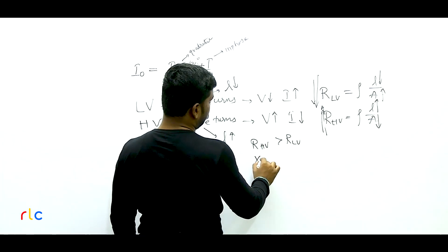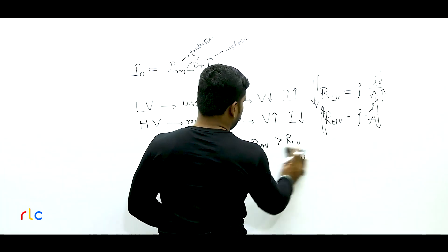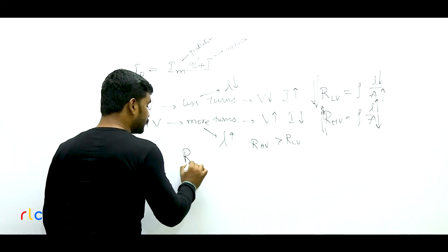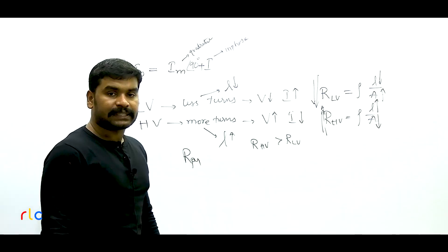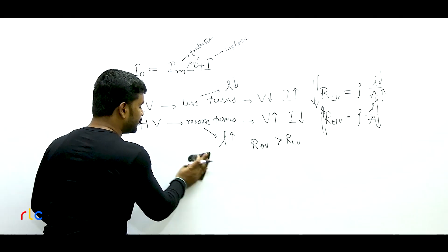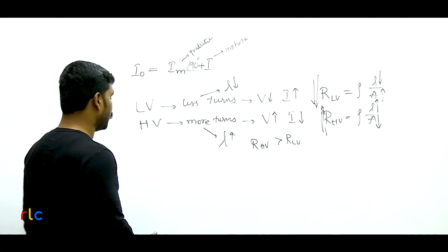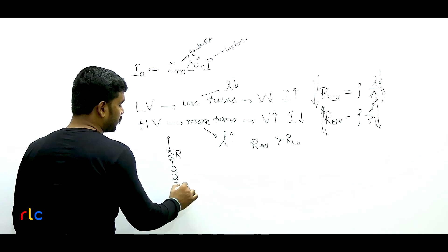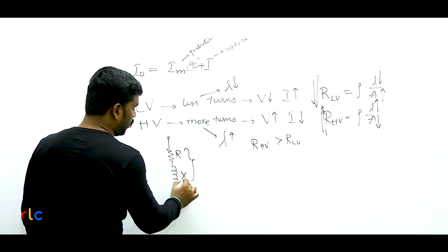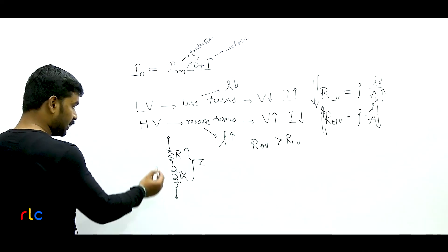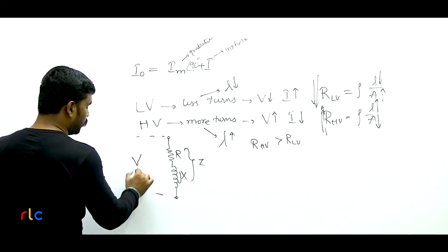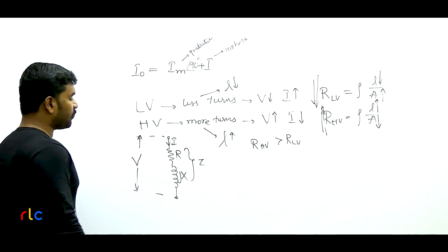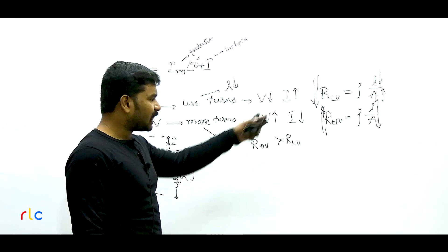Looking at the phasor diagram: VAB is the reference; E1 and E2 are 90 degrees lagging from flux; the inductive current I lags E2 by 90 degrees further. So relative to VAB, the current I appears to be 90 degrees leading. With respect to VAB, current I leads by 90 degrees. Alternatively, this could be stated as 270 degrees lagging. But according to the given options, Option B — I leads VAB by 90 degrees — is the right answer.